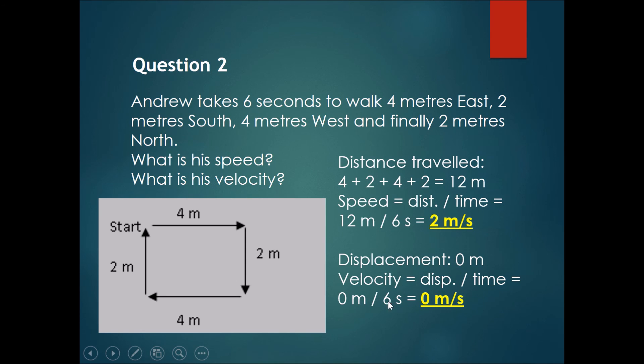So his velocity becomes displacement divided by time: 0 divided by 6. Anything that 0 divides by becomes 0, so his velocity is actually 0 meters per second, no matter how fast he ran or no matter how long he ran.